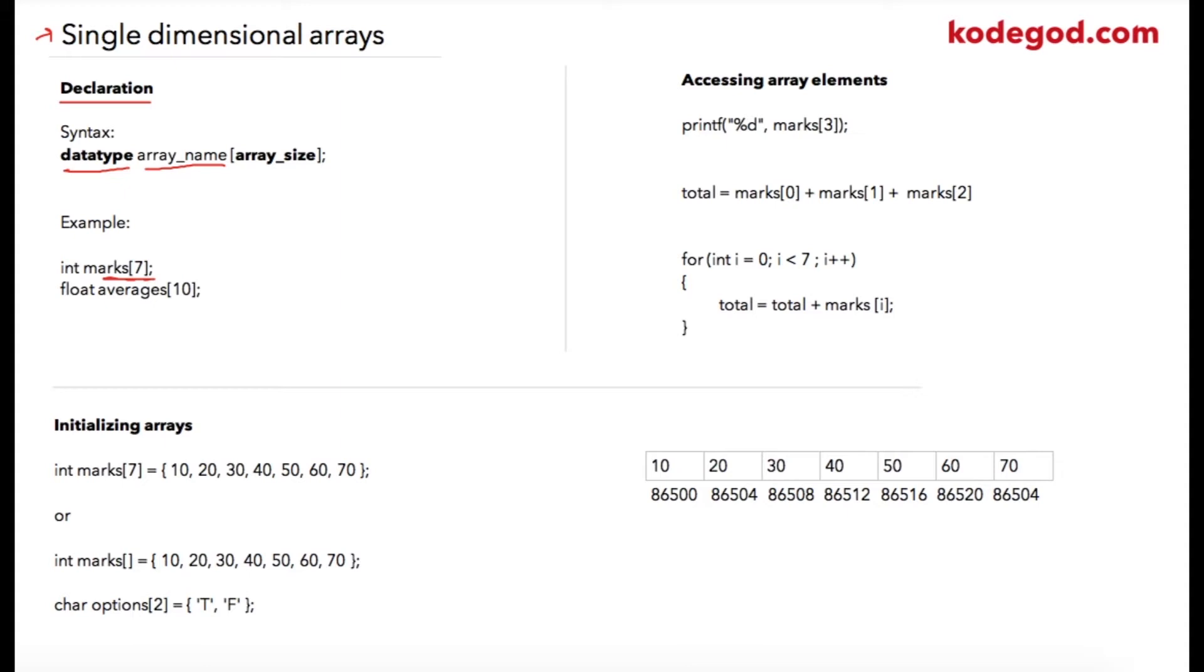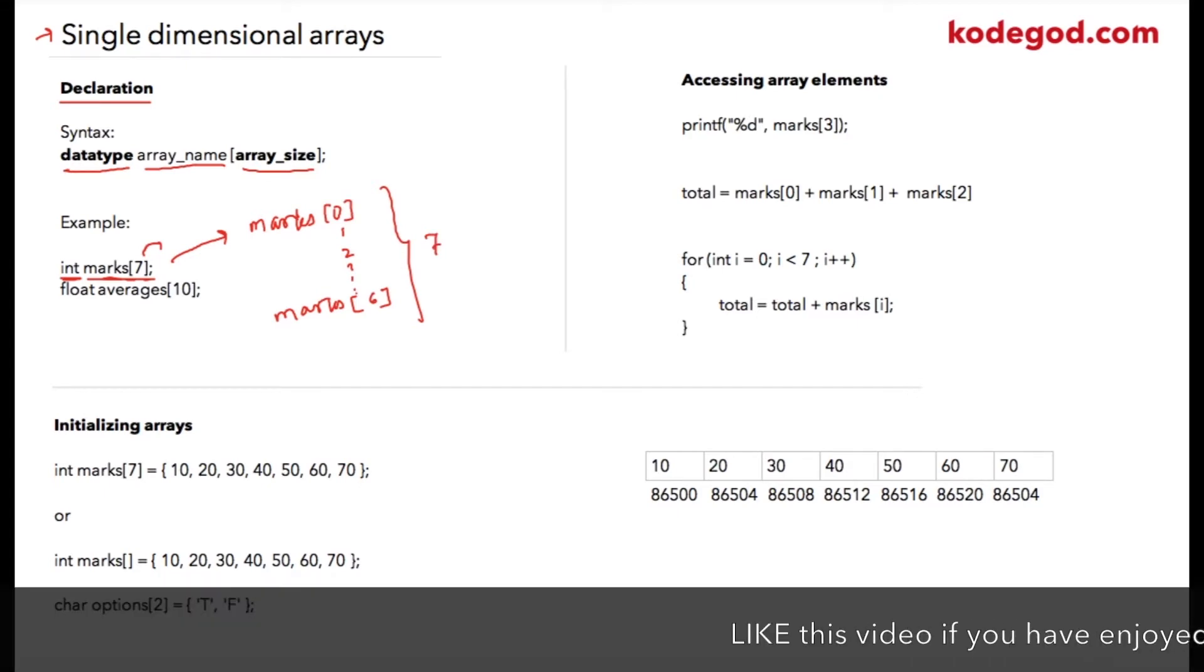Here is one example. I am declaring an array of type integer, naming it as marks, and I am specifying array size as 7. So I am declaring a collection of 7 integer variables: marks 0, 1, 2, 3, and so on till marks 6, so total 7 elements. Similarly, in the second example, I am declaring an array of type float, naming it as averages, and setting array size as 10. So it will be an array of 10 float variables.